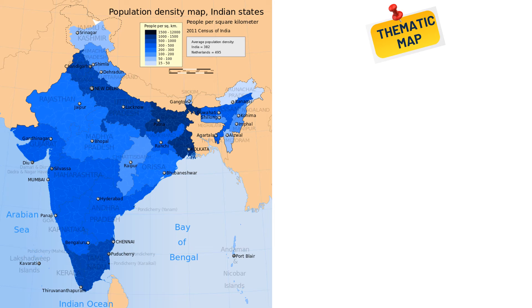For example, this map shows population density, where darker shades of blue indicate areas with higher population density and lighter shades indicate lower density. A population thematic map focuses on visualizing population-related data, and these maps can illustrate various aspects of population distribution, density, growth, composition, or other demographic factors.